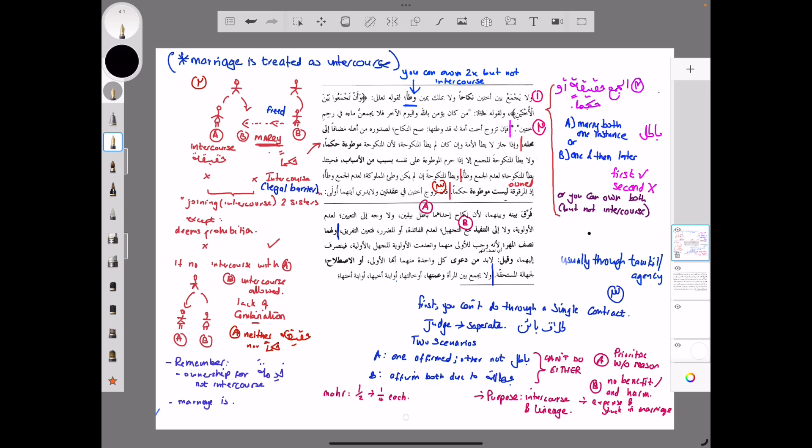Okay, so let's begin insha'Allah. So the author says, and let's begin with the first scenario: wa la yajma'u bayna al-ukhtayni nikahan - you're not to combine two sisters through nikah, wa la bi-milki yaminin wat'an - nor through lawful ownership permitting intercourse. And he brings in two verses from the Quran: wa an tajma'u bayna al-ukhtayni, which is obviously the strongest proof that you take two sisters.